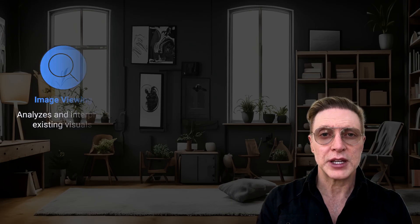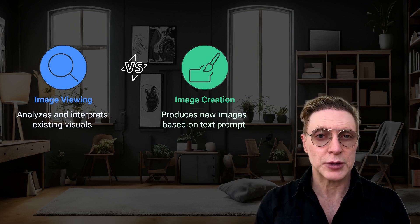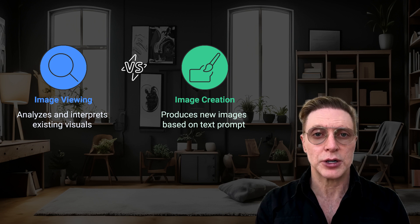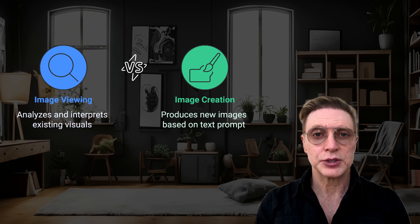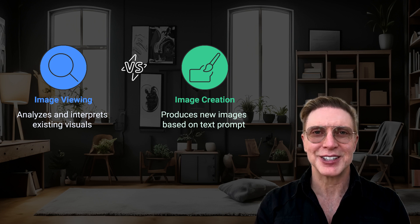When it comes to image-related features, Mistral's capabilities fall into one of two categories: image viewing and image creation. For image viewing, you can attach an image and get a description of that image, or have that image interpreted — suppose it's a chart or a diagram. If the image has to do with a puzzle, you can ask the chat to solve the puzzle. And regarding image creation, this is what we're here to talk about. This is the good stuff.